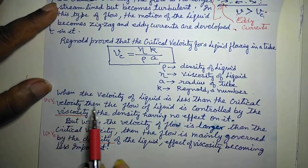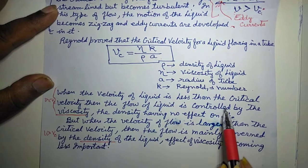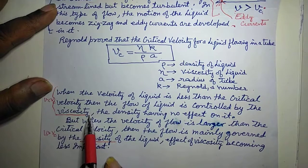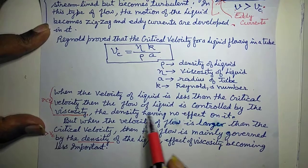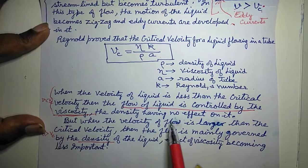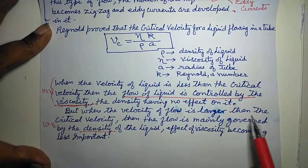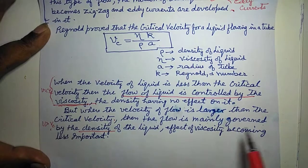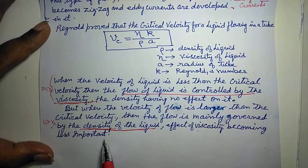When the velocity of the liquid is less than the critical velocity, then the flow of liquid is controlled by viscosity — yani jab v is less than vc, means streamlined hai — toh uss samay flow of liquid is controlled by the viscosity, the density having no effect on it. But when the velocity of flow is larger than the critical velocity, when v is greater than vc, then the flow is mainly governed by the density of the liquid and the effect of viscosity becomes less important.